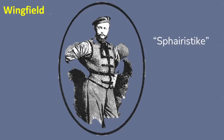Wingfield claimed to have based his game on the ideas of the Greek game called 'sphairistike,' from the Greek for playing a ball. Many experts believe he just incorporated the concept of popular English activities like playing on courts using squash rackets and playing badminton in the open air. Wingfield's game was originally referred to as 'tennis on the green,' that is why it is called lawn tennis — playing tennis on a lawn, since it was played on green grass courts.